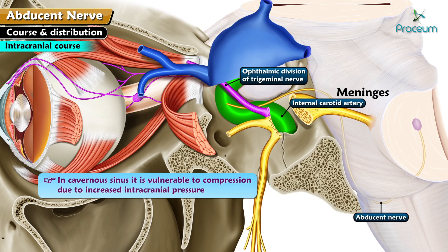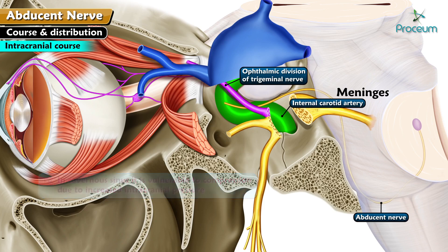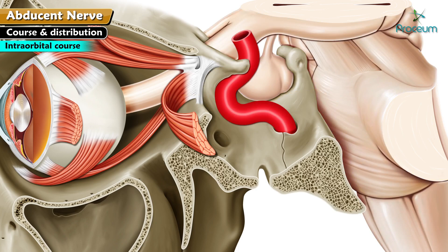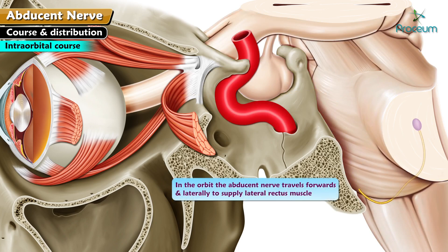In the cavernous sinus, the abducens nerve is vulnerable to compression in conditions due to increased intracranial pressure. It exits the cranium through the middle part of the superior orbital fissure, enclosed in the common tendinous ring. In the orbit, the abducens nerve travels forwards and laterally to supply the lateral rectus muscle.